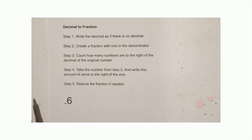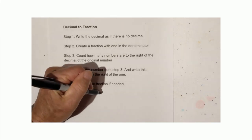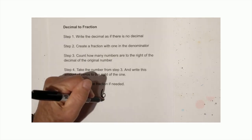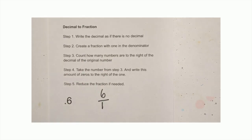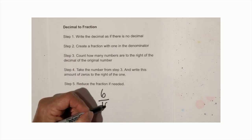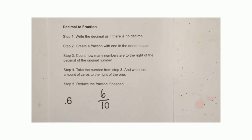So let's see that played out. Step one: I'm going to write it as if there's no decimal. Next I'm going to create a fraction with one. I'm going to count how many numbers are to the right of the decimal — that is one. I'm going to take this number and write the number of zeros, and that is one. So now I have six tenths.